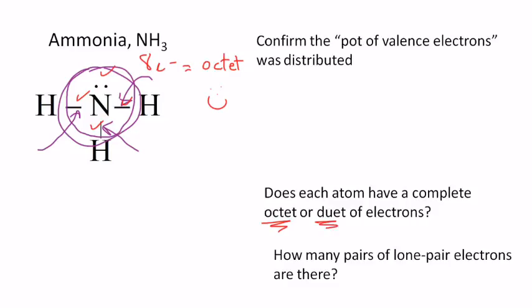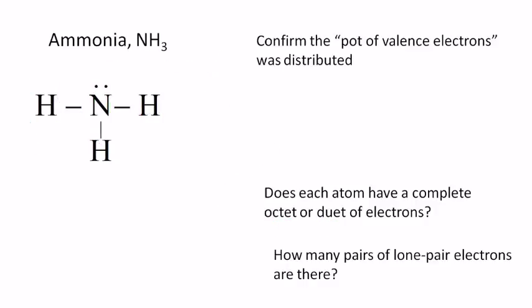In the case of hydrogen, hydrogen doesn't want an octet. It just wants a duet, so I could draw circles around the hydrogen atoms, and they actually have a duet. So that check is right. If they've drawn the Lewis structure right, that check will be right. The last question, how many pairs of lone pair electrons are there? And you would just say one. There's only one pair of lone pair electrons.